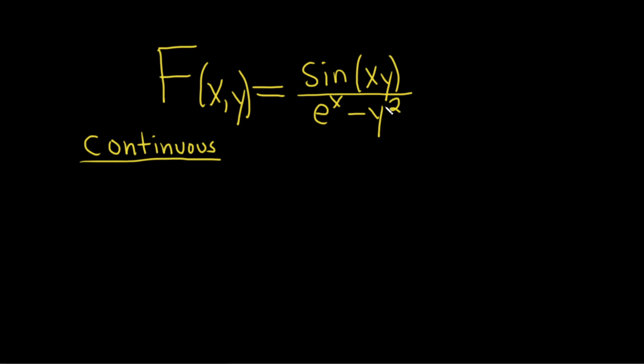The only issue is when the denominator is zero. We're going to have a problem if we have this because then we'll have zero on the bottom and we can't have that.